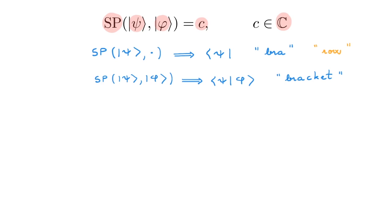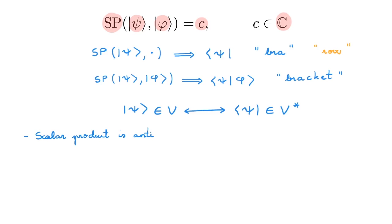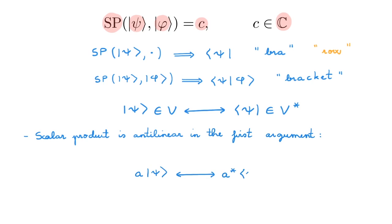To be absolutely clear: for a ket |ψ⟩ that belongs to state space, we have a corresponding bra ⟨ψ| that belongs to the dual space V*. When going from a ket to a bra, there is an extra subtlety that arises from the fact that the scalar product in a complex vector space is anti-linear in the first argument. What that means is that for a ket A|ψ⟩, the corresponding bra is A*⟨ψ|.